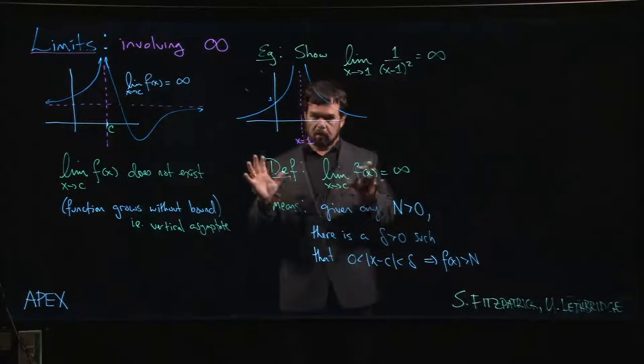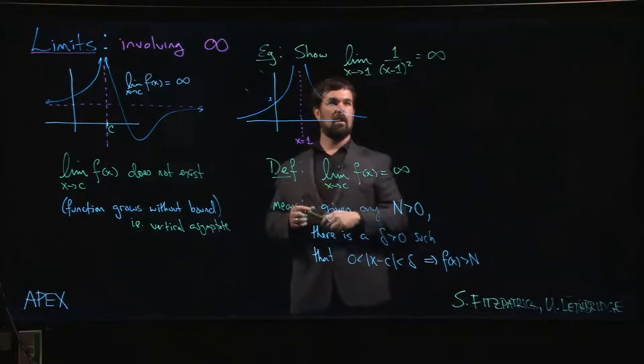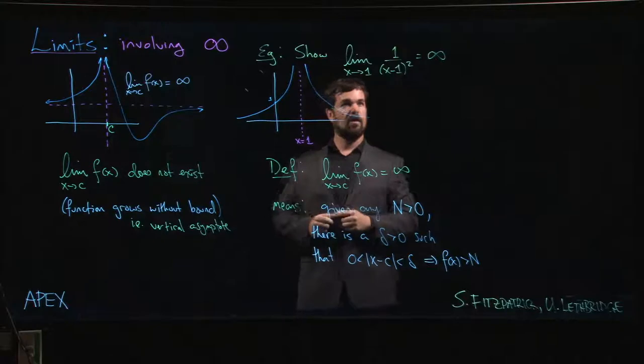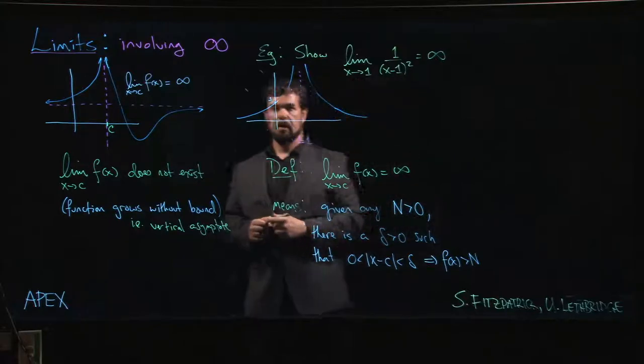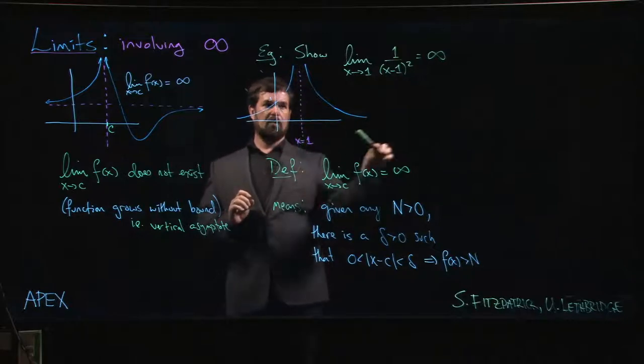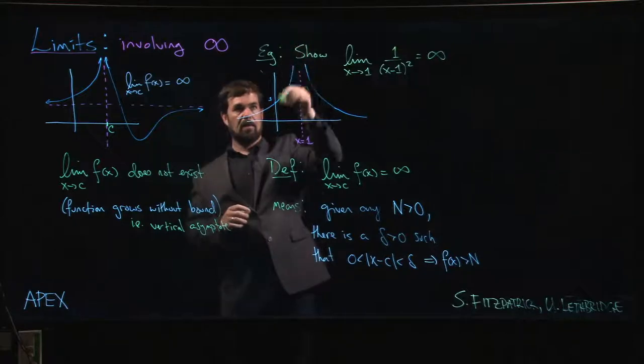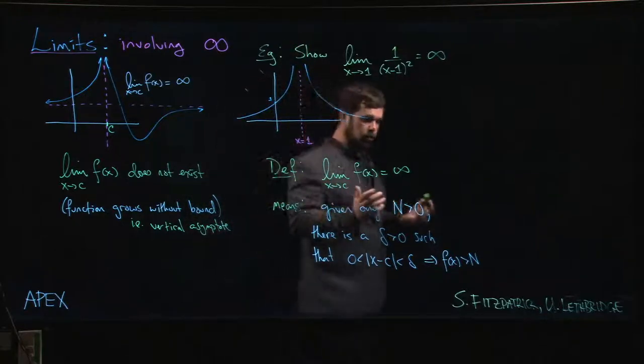All right, so we'll start with a fairly simple example here where we want to show that the limit as X approaches 1 of this function is infinity. From the plot it's pretty clear - we can see this vertical asymptote, we can see the Y values shooting off to infinity. The graph is going up, so it looks pretty obvious.